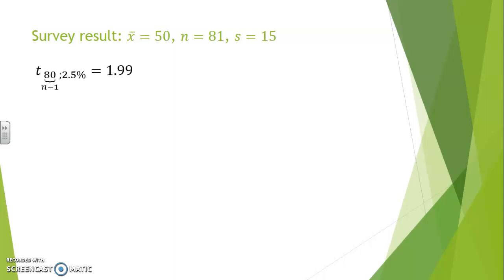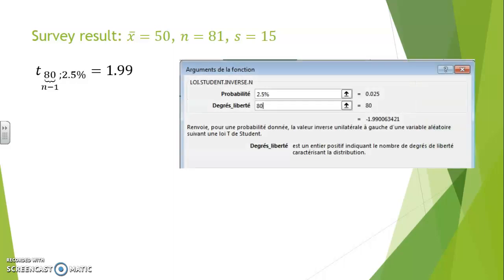With Excel, you can find that T n minus 1, 2.5%, is 1.99. You can find this in Excel from la loi student inverse by indicating you would like to cut off the 2.5% at the extremes. In English versions of Excel, you will find T inv as the function with which you can find the value of T to exclude the 2.5% at the extremities.